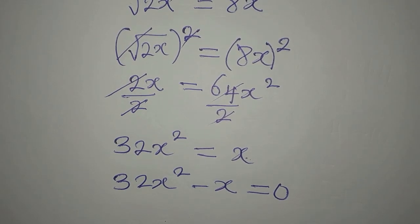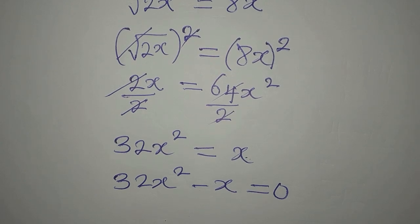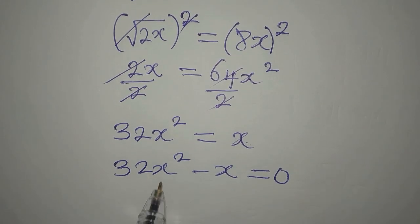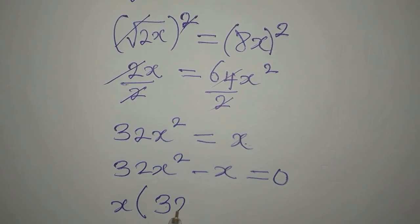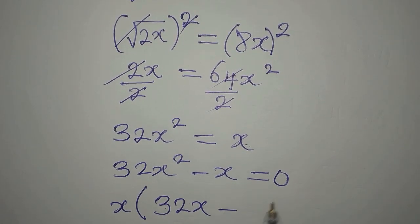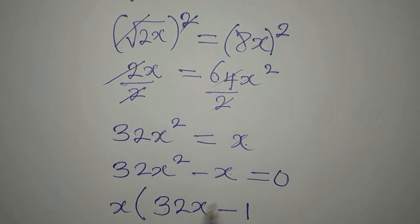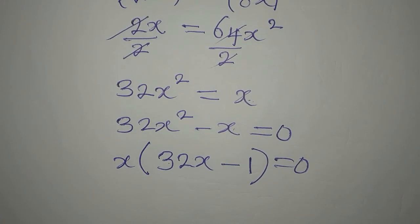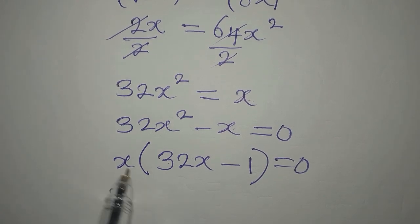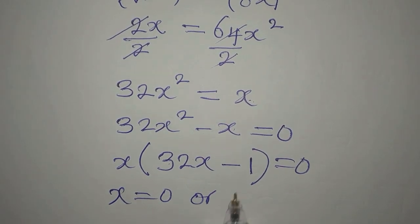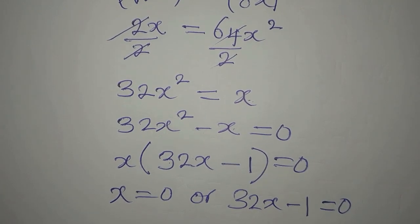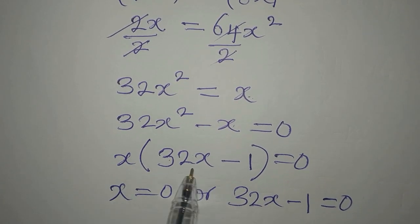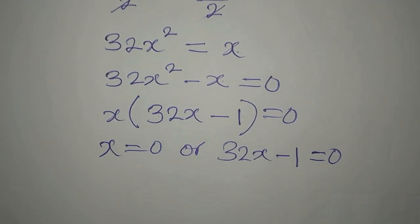This is now a quadratic equation, even if it's looking simple. So we will just factorize. So that x will come out, then we have 32x minus 1, because x divided by x is 1. So this is equal to 0. You can now say that this x here is 0, or 32x minus 1 is equal to 0, since we are multiplying this and this to get 0. Either of them must be equal to 0.